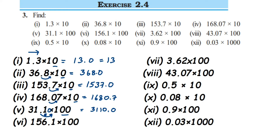The sixth one: same thing — we are multiplying with 100, so two zeros, so the decimal has to move two digits to the right. We move two digits to the right — after the last digit we have no number, so we put a zero. This gives us 15610.0.